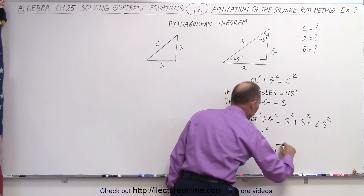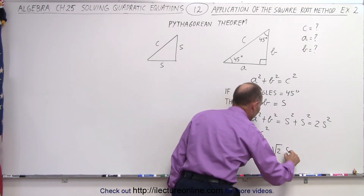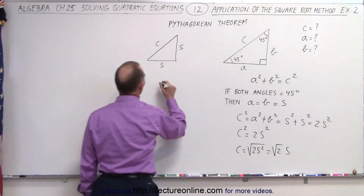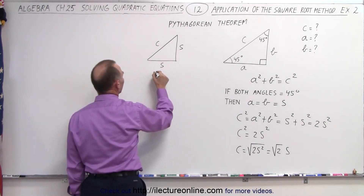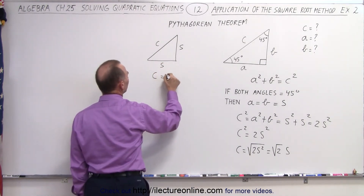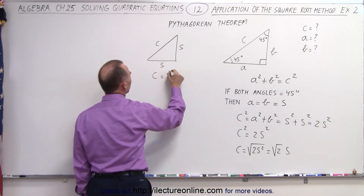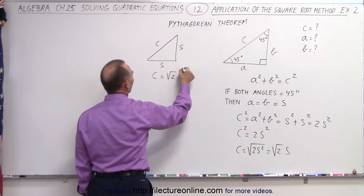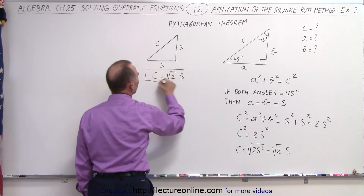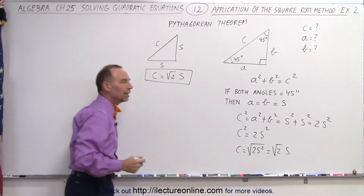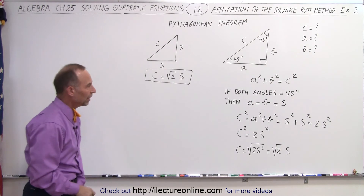That is equal to the square root of 2 times S. In other words, the hypotenuse C is equal to the square root of 2 times one of the two sides, S being A and S being B.